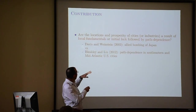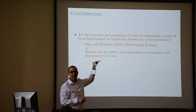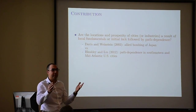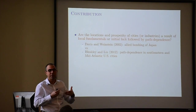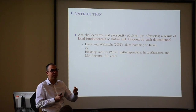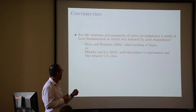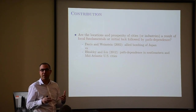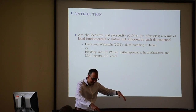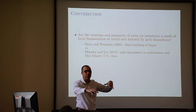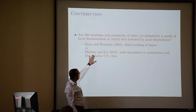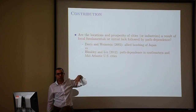Seminal papers speak to each of these mechanisms. People have looked at the Allied bombing of Japan and Europe — many cities were destroyed, and within two decades, cities and their relative ranking, and similarly for industries, came back to where they were before the destruction. That's taken as evidence for local fundamentals. One counter-argument is maybe these shocks are not large enough: you destroy the cities, but all the roads that connect them are still there. For the path dependence idea, there's a cool paper that speaks to our geography here.